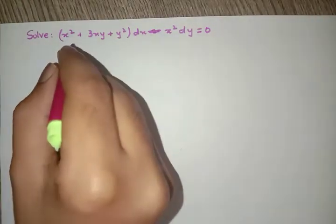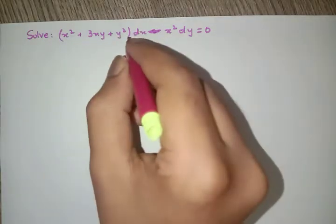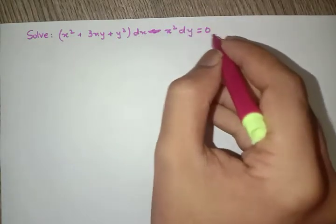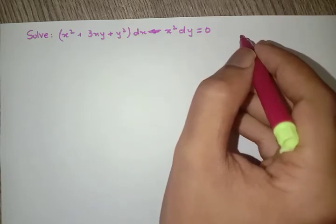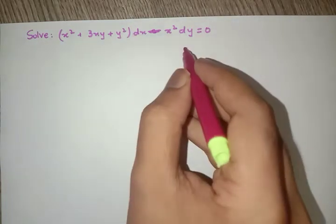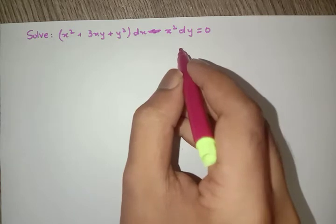We need to solve (x² + 3xy + y²)dx - x²dy = 0. The first thing we need to identify is that this equation is a differential homogeneous equation.